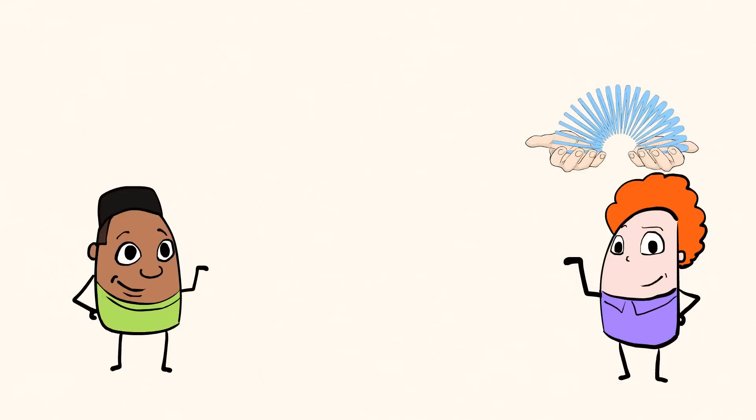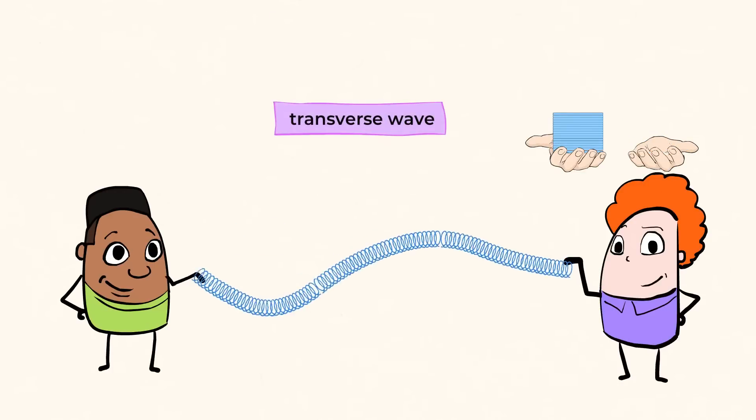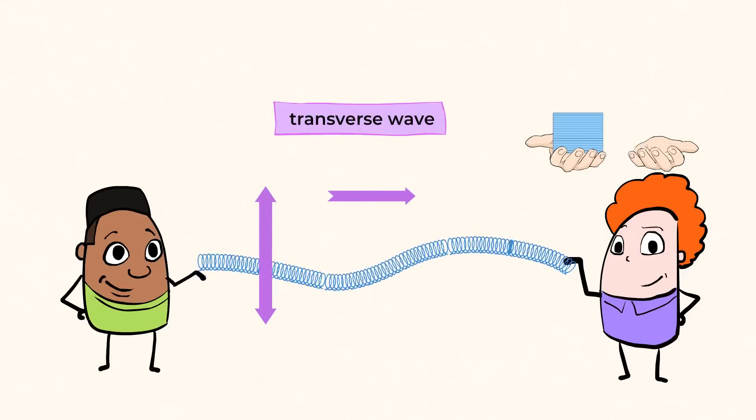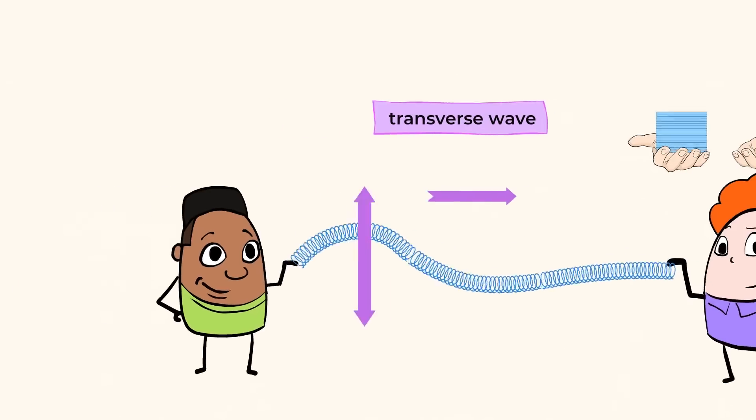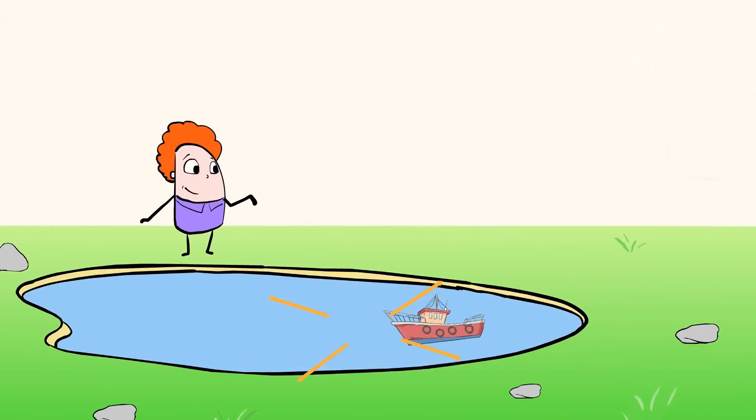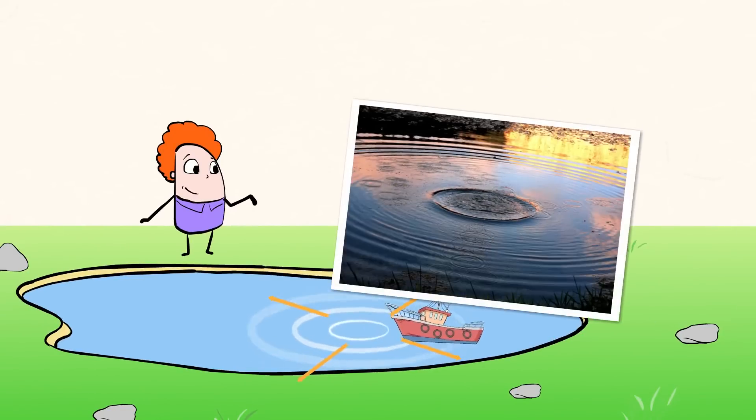But we can also use this toy to show a transverse wave, like a sound wave. A transverse wave moves perpendicular to the disturbance that caused it. Remember the pebble we threw into the pond? Those ripples are an example of a transverse wave.